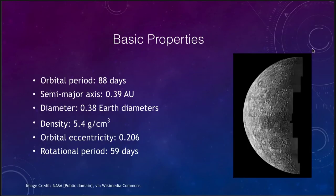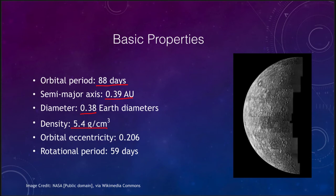Some of the basic properties to start off with: its orbital period is 88 days, meaning it takes about three months to orbit around the Sun once. Its semi-major axis or average distance from the Sun is about four tenths of an astronomical unit — less than half the distance of the Earth from the Sun. Its diameter is a little more than a third the Earth's diameter. Its density is very similar to the Earth's, which tells us it has a very high concentration of metallic materials. Its orbital eccentricity is about 0.2, which among the major planets is the largest eccentricity.